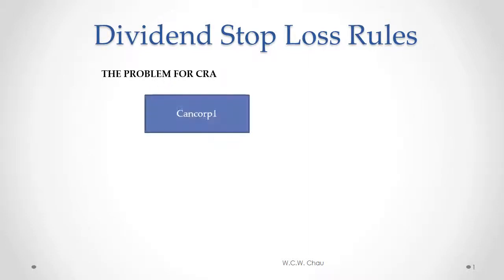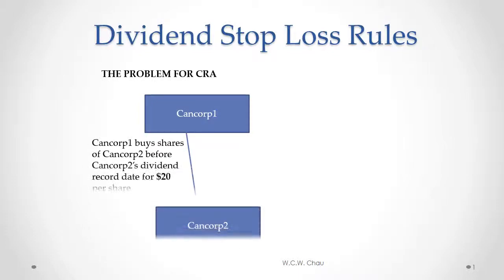So let's say we have a Canadian corporation that we'll call CanCorp 1. CanCorp 1 decides to buy some of the shares of another Canadian corporation called CanCorp 2, and they buy those shares either just before or on the dividend record date for CanCorp 2.